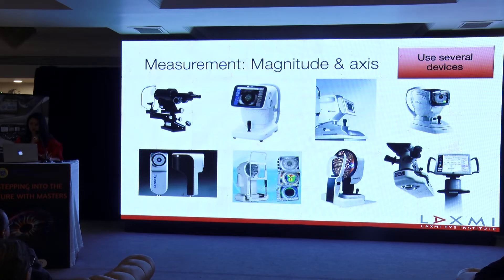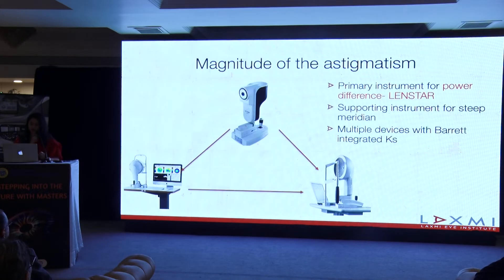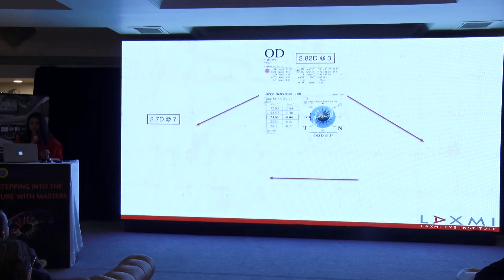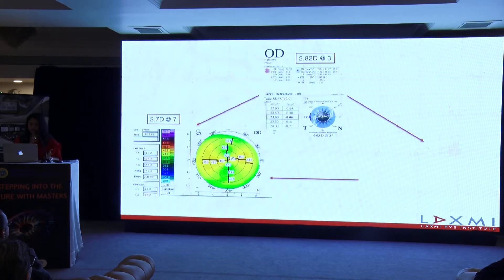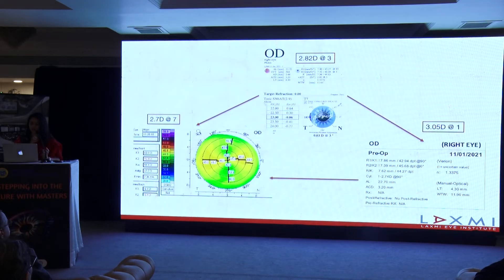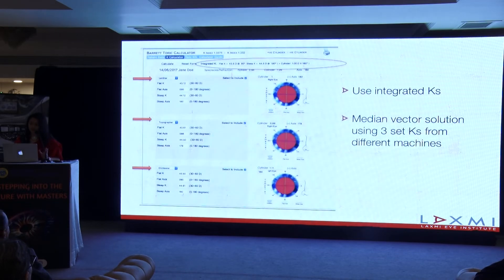The recommendation is to use one instrument like a LENSTAR or the IOLMaster as the primary instrument for measuring the magnitude of the cylinder, and then to use the topographer as the primary instrument for measuring the steep meridian or axis of the cylinder. In this eye the LENSTAR gives us the amount of astigmatism, which is then confirmed with the topography. The axis of the topographer must be within 5 degrees from the LENSTAR to validate the amount of cylinder. A third instrument helps to reconfirm the same data. Another approach is to integrate all these scans on a Barrett toric calculator, which will give you the median vector solution using any or all of your machines.